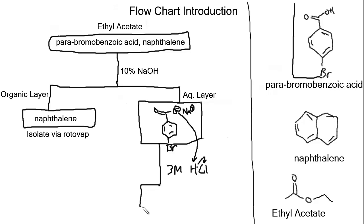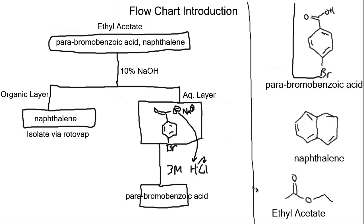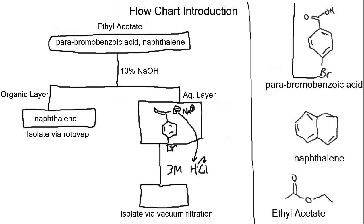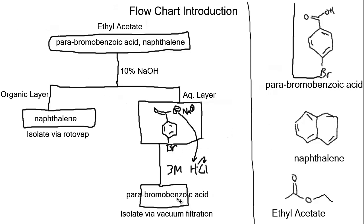Once we form parabromobenzoic acid, we can type that back in — it's not a salt so we don't need to draw it out. Parabromobenzoic acid is in this box right here, and we can isolate it via vacuum filtration. After protonating our salt, our organic compound is no longer water-soluble, so it crashed out of solution, and we isolated that via vacuum filtration.